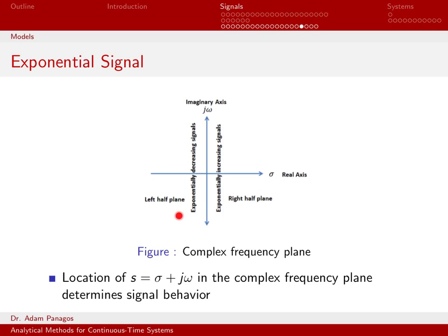If you're in the left-hand plane, so any point over here, you are what we call an exponentially decreasing signal. This corresponds to terms that have e to the minus t terms. So these things, as time gets large, are decaying exponentially.